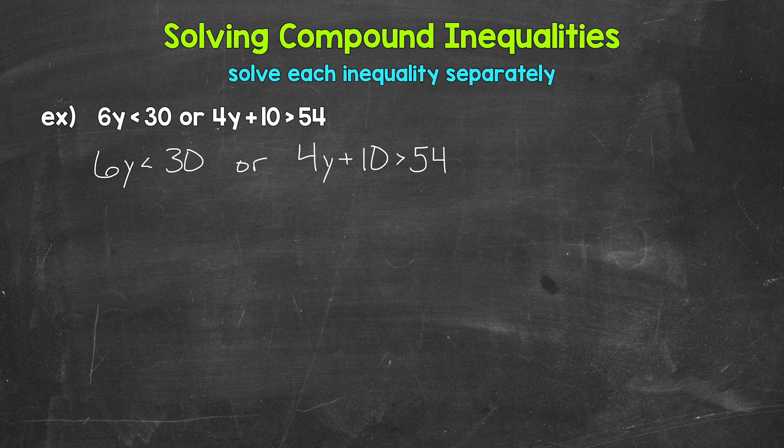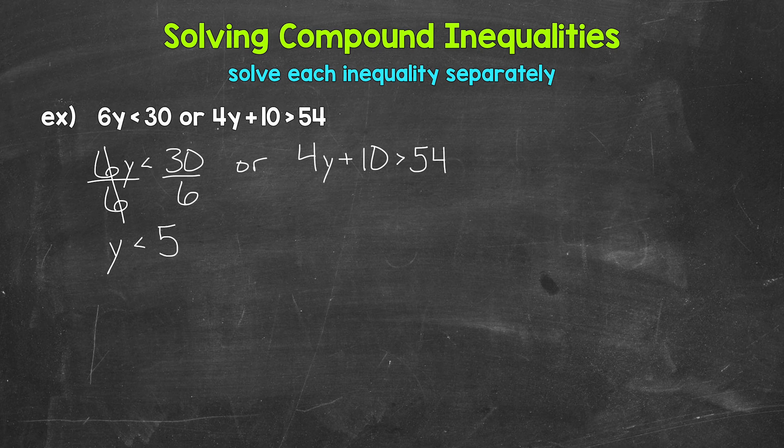Let's start with 6y is less than 30. We need to isolate that variable of y. Y is being multiplied by 6, so we need the inverse operation of multiplication. That's division. So let's divide the left side by 6. Now remember, whatever we do to one side of an inequality, we must do to the other. So we need to divide the right side by 6 as well. Now the 6s on the left side cancel each other out. So y is now isolated. Y is less than, and then on the right, 30 divided by 6 gives us 5. So we have y is less than 5.